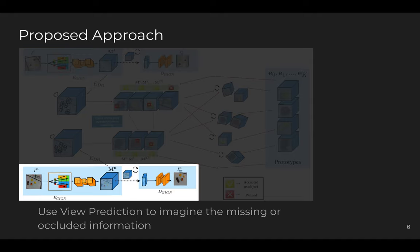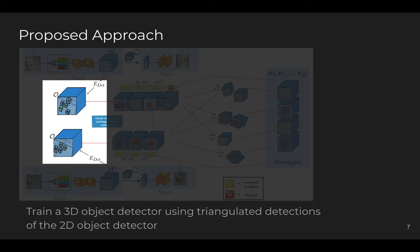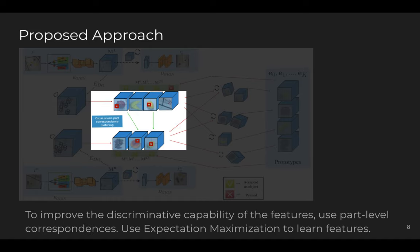We repeat this for multiple scenes. We have a 3D detector — we don't assume a pre-trained one. We initially train our 3D detector using triangulated 2D detections on multiple views. This detector can initially be poor and give wrong detections, but we show that we can improve it. After we have cropped objects, some correct and some wrong, we use part-based metric learning, extracting patches and applying metric learning to bring similar patches closer and different-object patches farther apart.